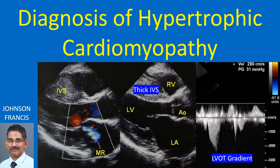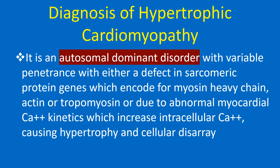Diagnosis of hypertrophic cardiomyopathy. Hypertrophic cardiomyopathy is a genetic disorder with a guarded prognosis which occurs in about 1 in 500 individuals. It is an autosomal dominant disorder with variable penetrance, with either a defect in sarcomeric protein genes which encode for myosin heavy chain, actin or tropomyosin, or due to abnormal myocardial calcium kinetics which increase intracellular calcium causing hypertrophy and cellular disarray.